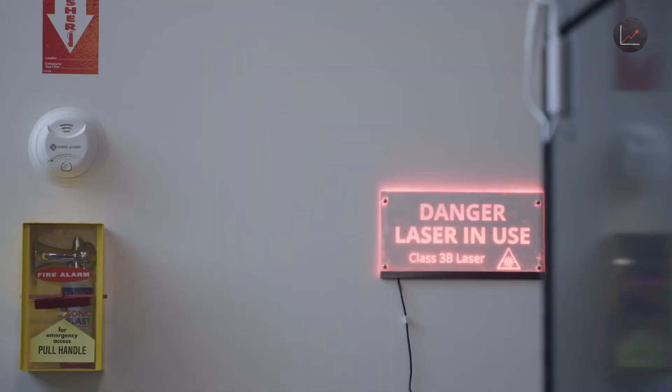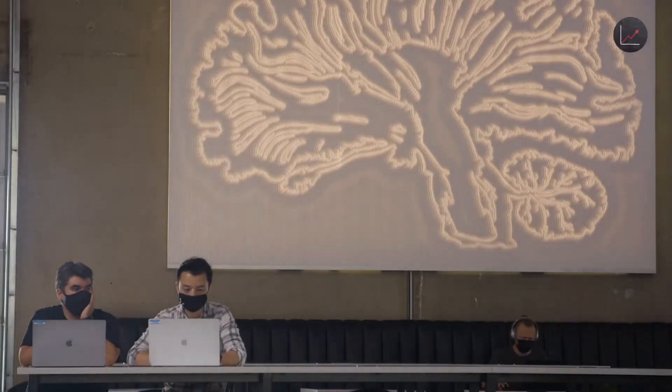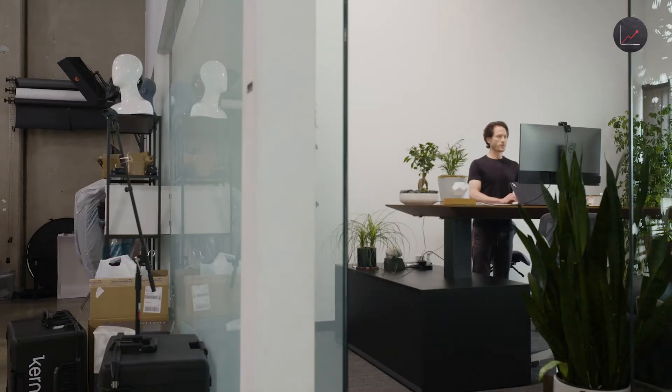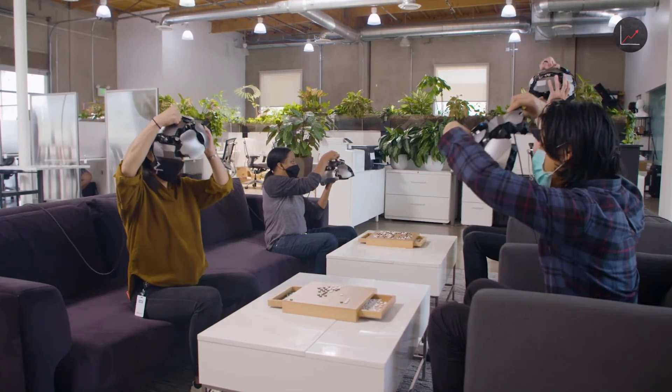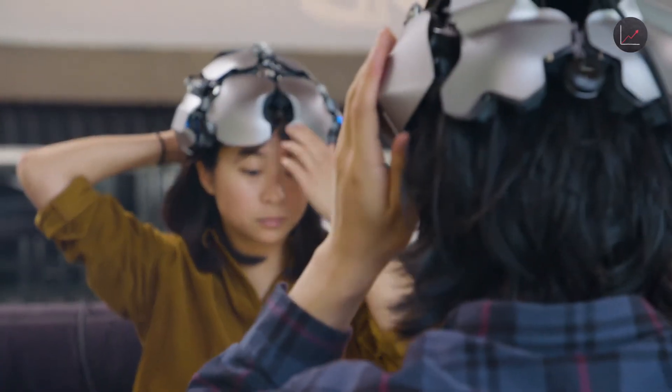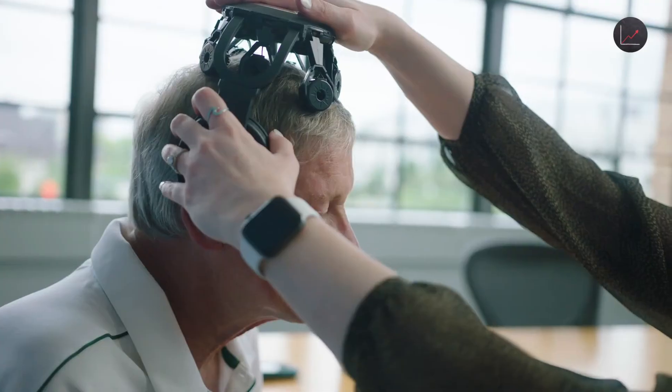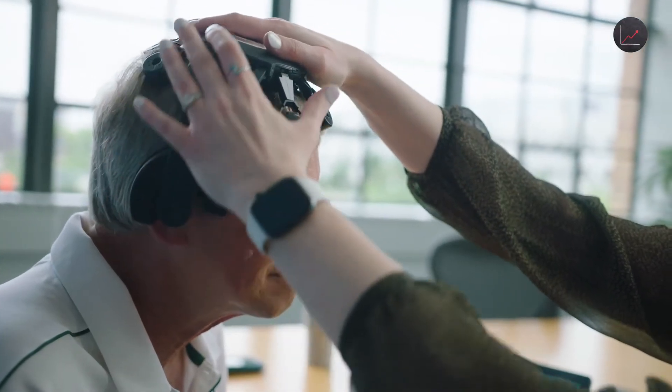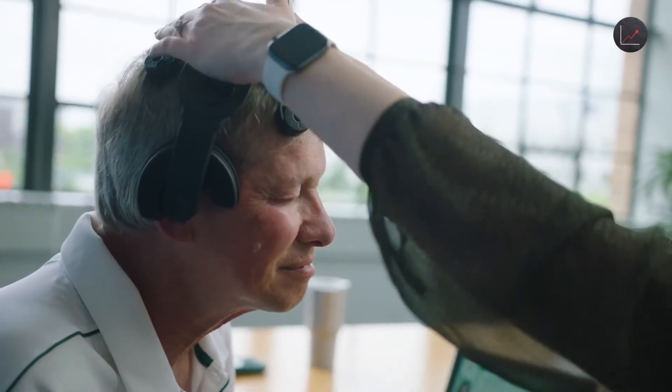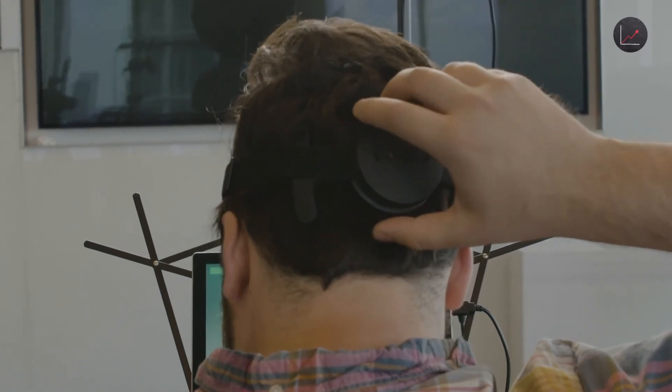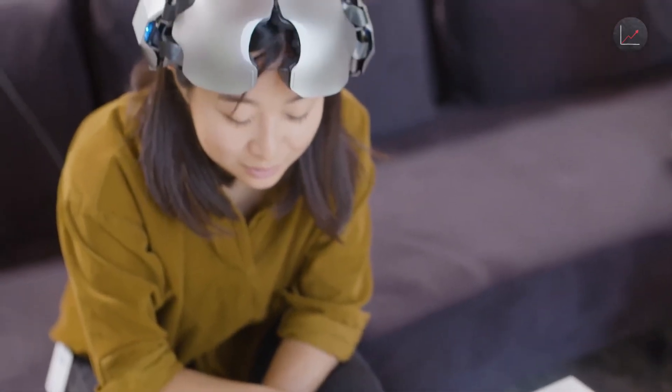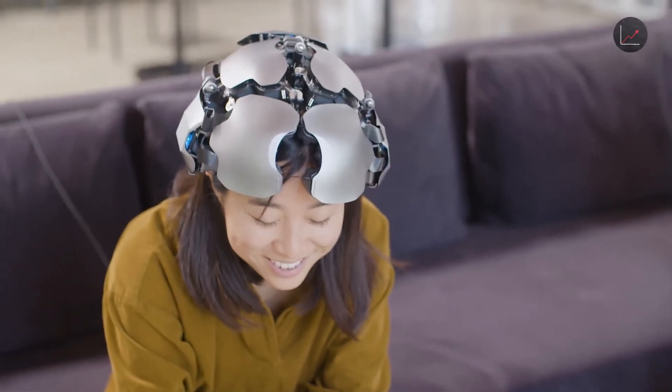Another such company is Los Angeles-based Kernel. With over $100 million in funding, founder Brian Johnson is setting out to read brain activity in ways we haven't quite seen before. Kernel pitches its first product, a $50,000 headset called Flow, as a giant leap forward for the field. Most headsets on the market right now use EEG technology to get a fairly general idea of your brain activity. The Flow offers a much more detailed look inside your skull.